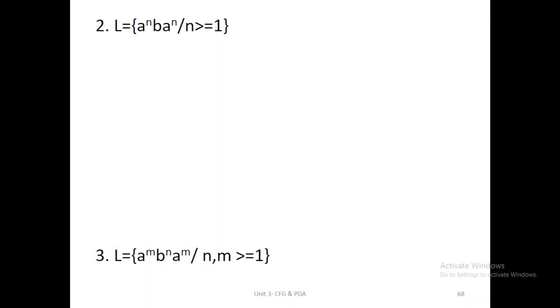Next, I am going to explain the second problem. Here, SIGMA is AB. The conversion of CFL to PDA contains a four-step procedure. The first step is drawing the transition diagram.